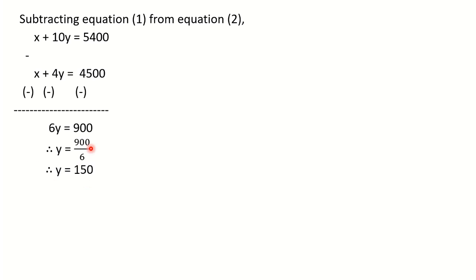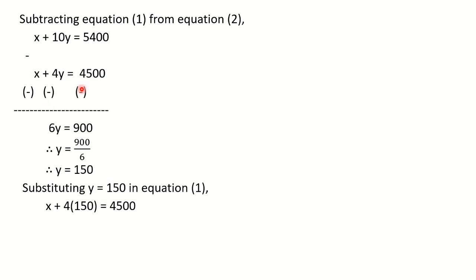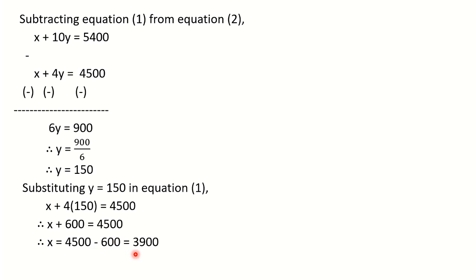Now substitute Y = 150 in equation 1, which is X + 4Y = 4,500. Replace Y with 150: X + 4(150) = 4,500. Since 4 × 150 = 600, we get X + 600 = 4,500. Shift 600 to the right-hand side: X = 4,500 − 600 = 3,900. We got the values of both variables: X = 3,900 and Y = 150. Therefore Sanjay's fixed monthly salary is Rs. 3,900 and the yearly increment is Rs. 150.